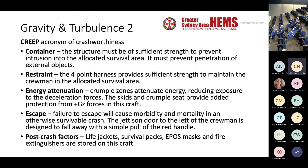Thinking about the container — the structure of the aircraft — which prevents penetration of external objects to a degree; the four or five point harness for pilots and crew, keeping staff and patients in their seats; energy attenuation, meaning crumple zones; for example, the skids and the seat we sit in reduce the amount of force delivered to personnel within the aircraft in the event of a crash.